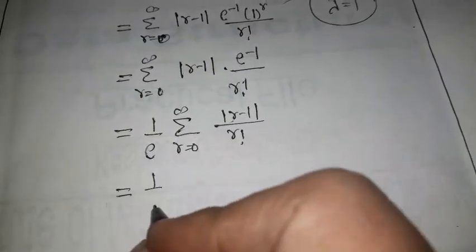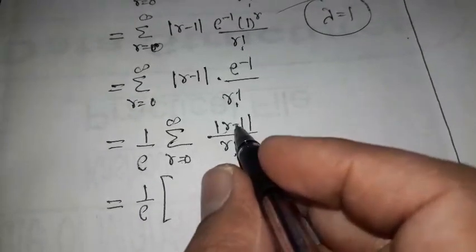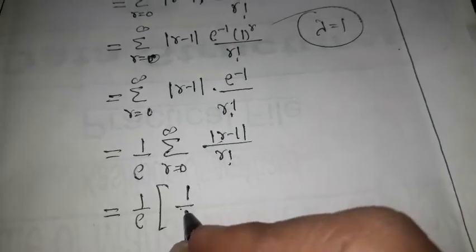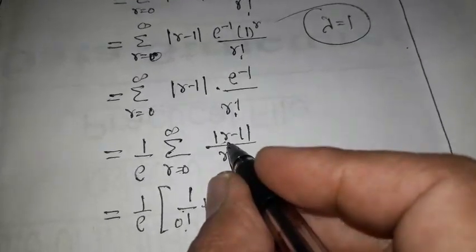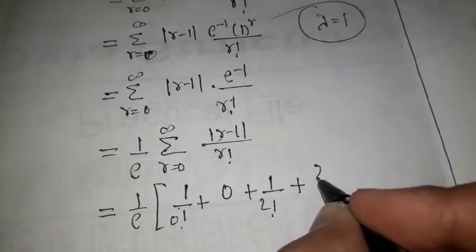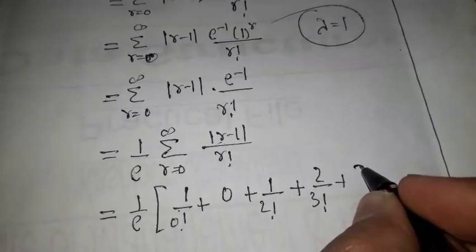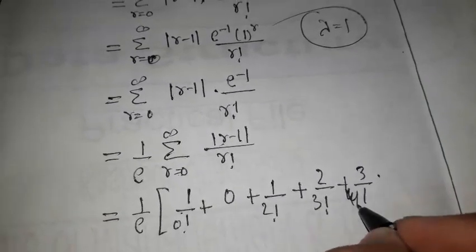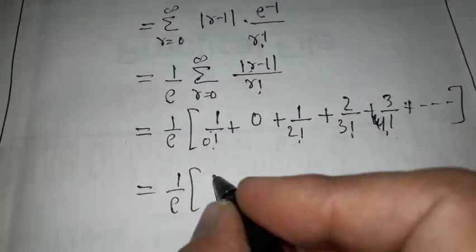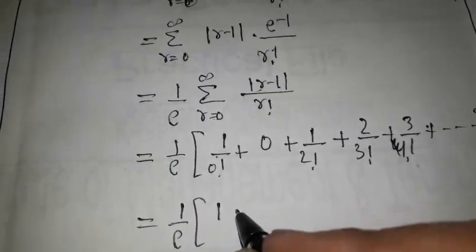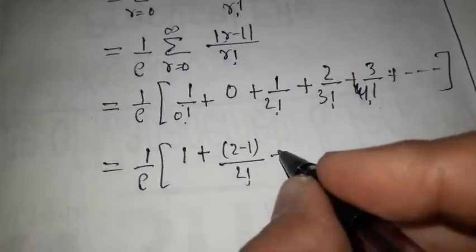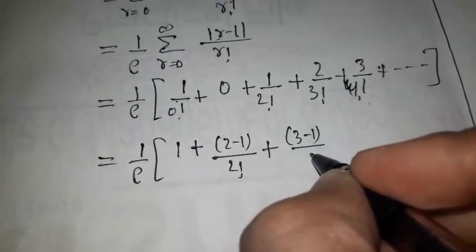Expanding for different values of r: putting r = 0 gives |0 minus 1| = 1, so 1 upon factorial 0. Putting r = 1 gives |1 minus 1| = 0, so this term is 0. Putting r = 2 gives 1 upon factorial 2. Putting r = 3 gives 2 upon factorial 3. Putting r = 4 gives 3 upon factorial 4, and so on.